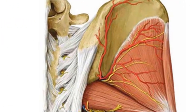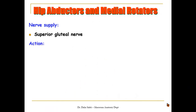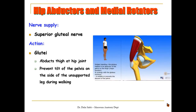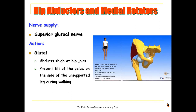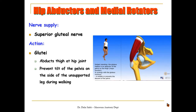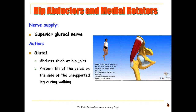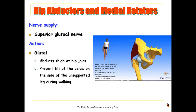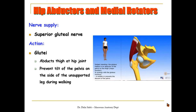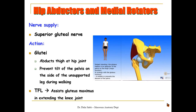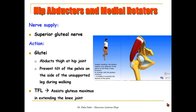The nerve supply of these three muscles is through the superior gluteal nerve, which passes between the gluteus medius and minimus and terminates at the tensor fasciae latae. The action of the abductors and medial rotators: the glutei abduct the thigh at the hip joint and prevent tilting of the pelvis toward the unsupported leg during walking. When you stand on one leg, your pelvis tilts to the unsupported side, and contraction of gluteus medius and minimus corrects the position of the pelvis, helping in walking. The tensor fasciae latae assists gluteus maximus in extending the knee joint through the iliotibial tract.